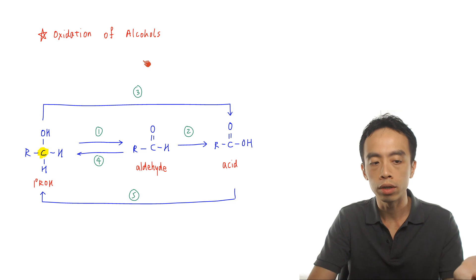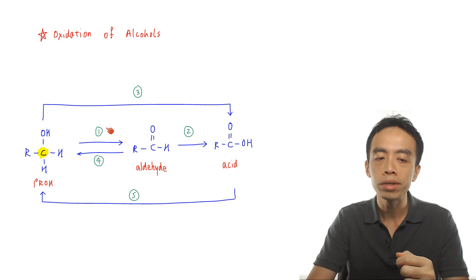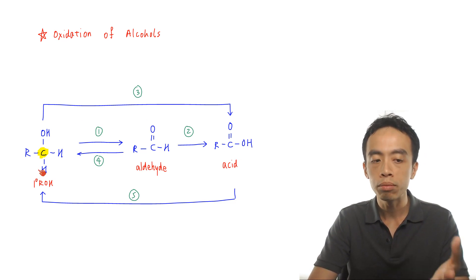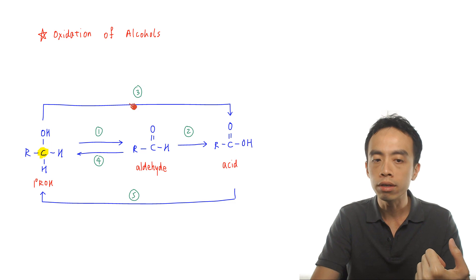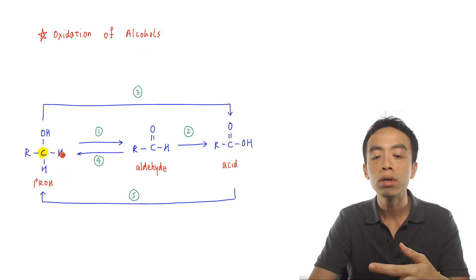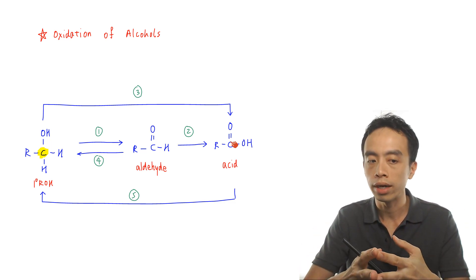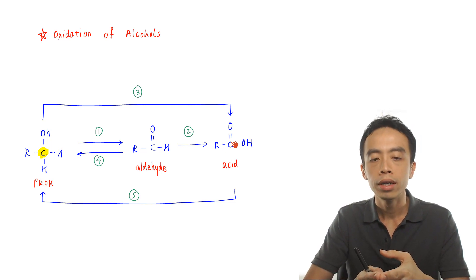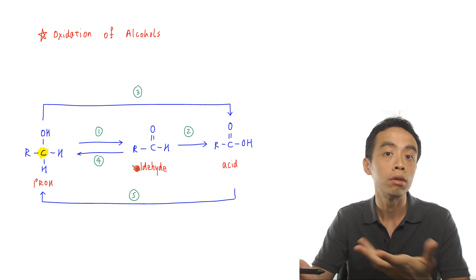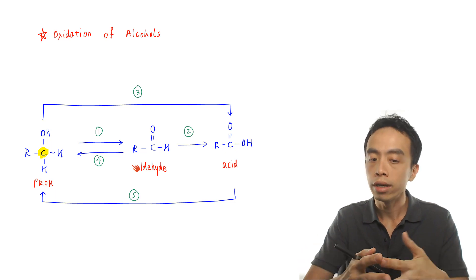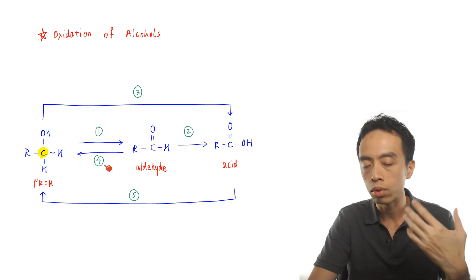We can also oxidize a primary alcohol directly to a carboxylic acid. Reaction 1 involves primary alcohol to aldehyde; reaction 2 is the oxidation of aldehyde to carboxylic acid; reaction 3 is the oxidation of primary alcohol all the way to the acid functional group. In the reverse direction, from right to left, this is reduction — so reaction 4 will be reducing an aldehyde back to a primary alcohol.